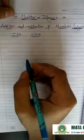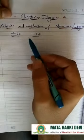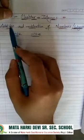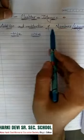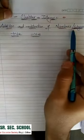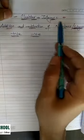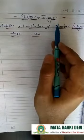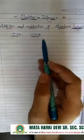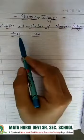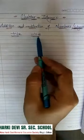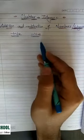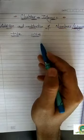Hello students, today we are going to learn about addition and subtraction of integers from Chapter 1. As you know, integers include both positive as well as negative numbers. We divide this topic into two parts according to the signs.